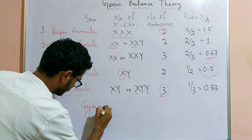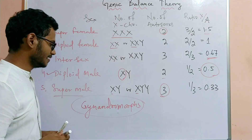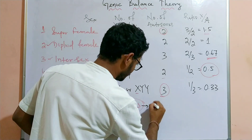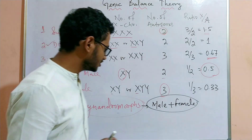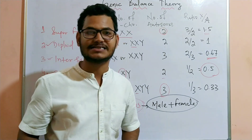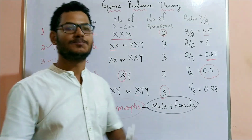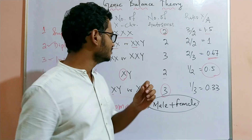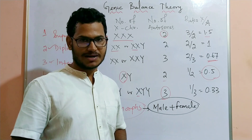Finally, remember the term gynandromorphs. Gynandromorphs are organisms having both male and female characters in a single body. They are not bilaterally symmetrical. Remember that gynandromorphs are different from intersex — they are not the same thing. This covers sex determination in Drosophila, how the genic balance theory plays an important role, and the experiments performed by Calvin Bridges using fruit flies.